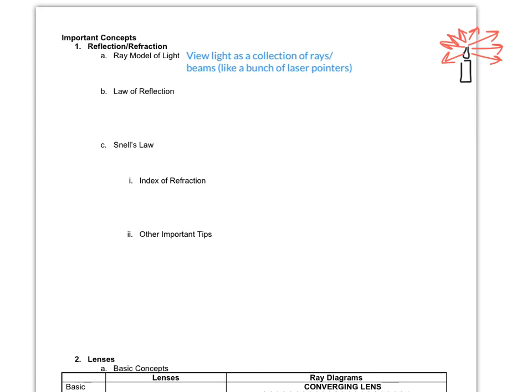Moving on to the law of reflection. This applies whenever any wave, light included, reflects off of a surface. It basically tells us that the angle going in, called the angle of incidence, equals the angle it leaves at, the angle of reflection. Equation-wise, we can say theta_I equals theta_R, where I and R stand for incidence and reflection.